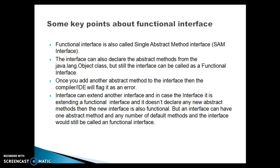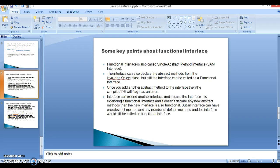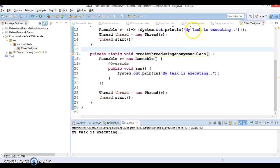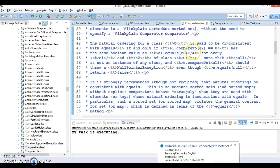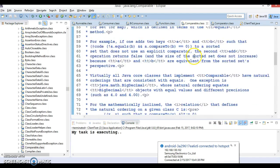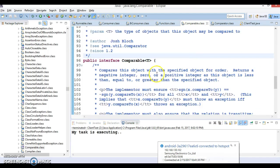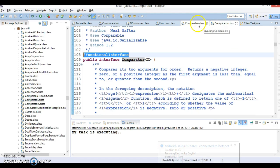The interface can also declare abstract methods from the java.lang.Object class, but the interface can still be called a functional interface. Let me show you. If you go to the existing JDK and look into the Comparator interface — not Comparable, but Comparator.